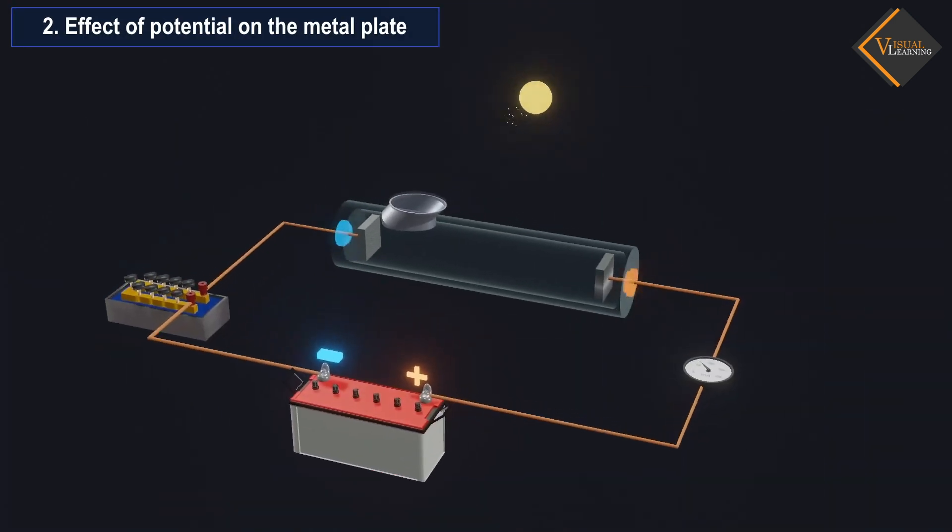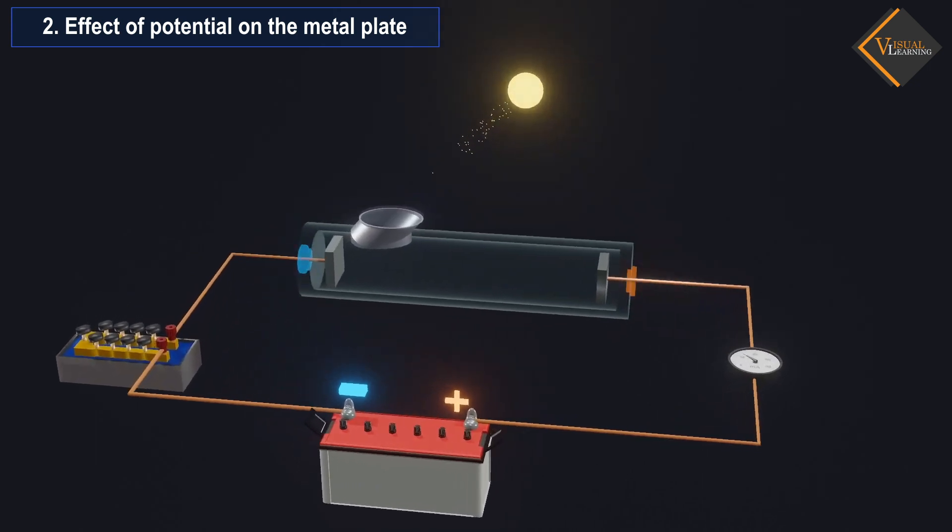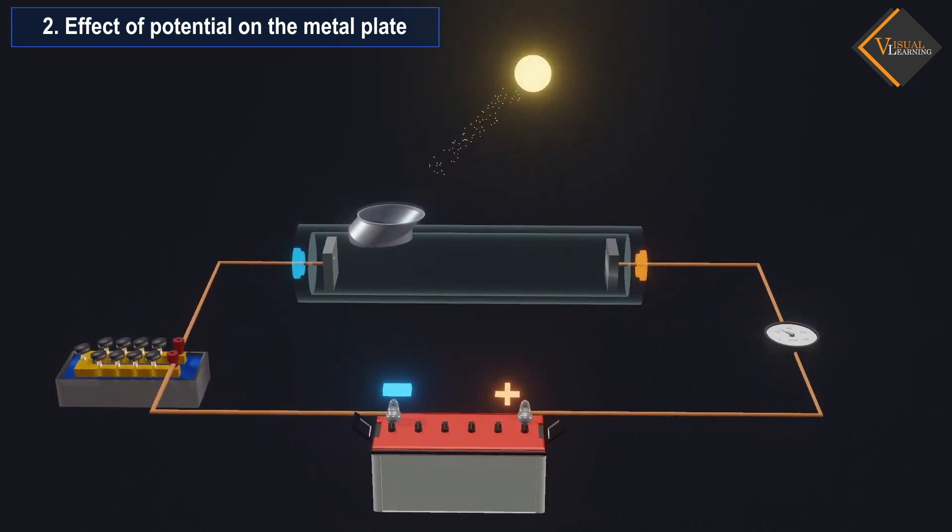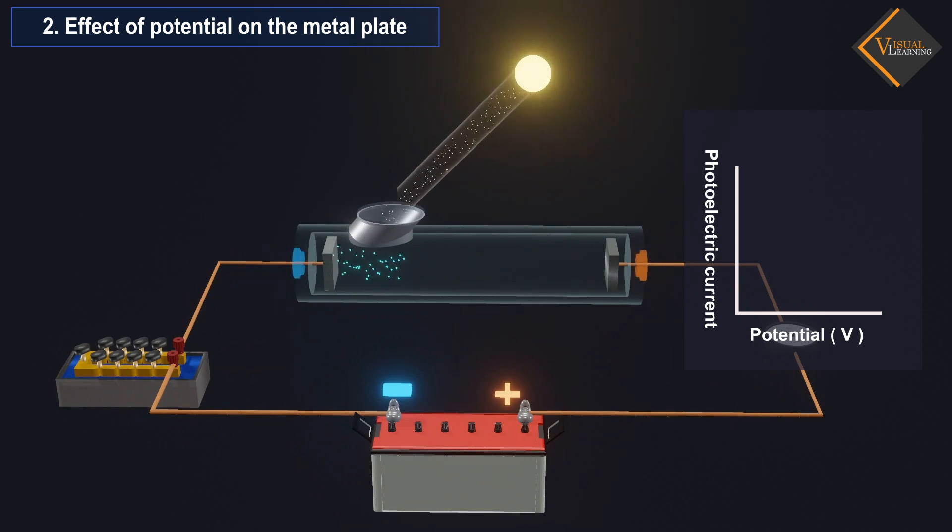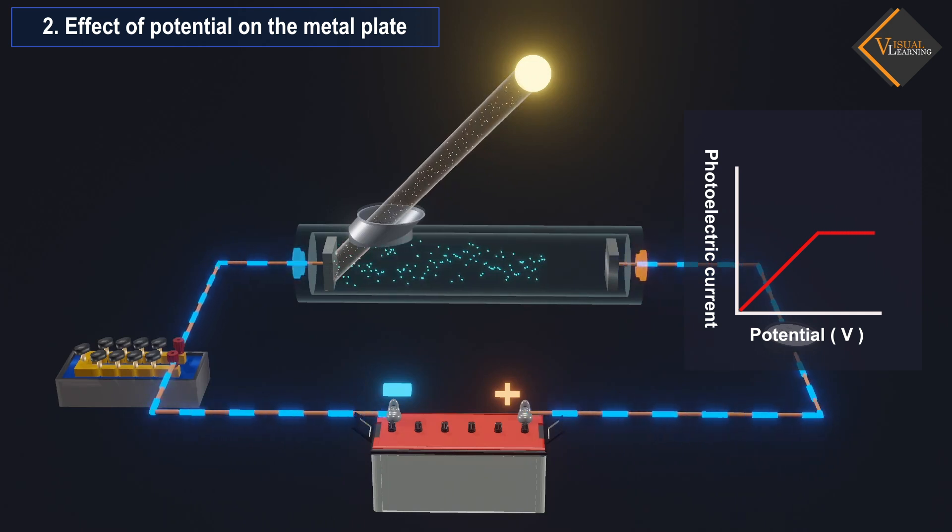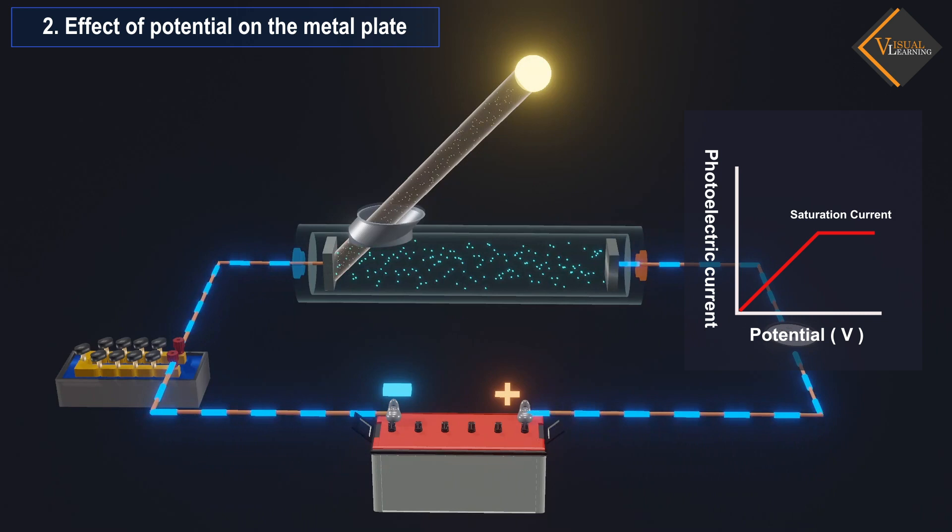Effect of potential on the metal plate: it was found in this experiment that the photoelectric current increases gradually with the potential or voltage. However, after reaching a certain value, increasing the voltage does not cause any further increase in the photoelectric current. This is called saturation current.